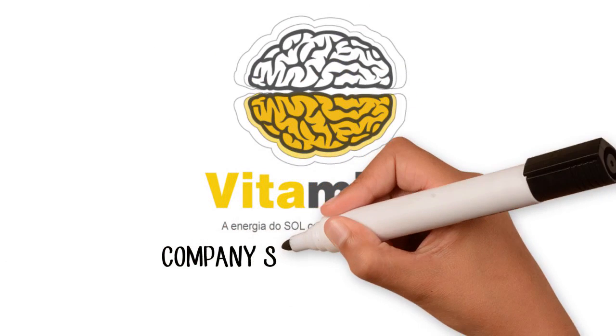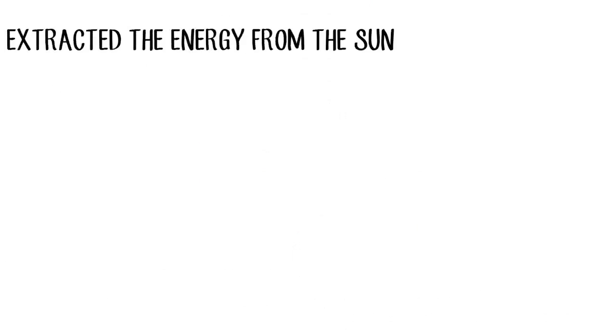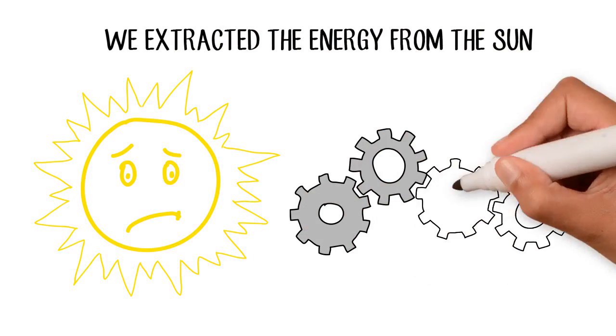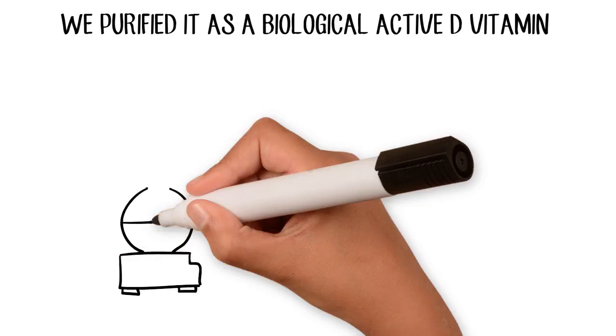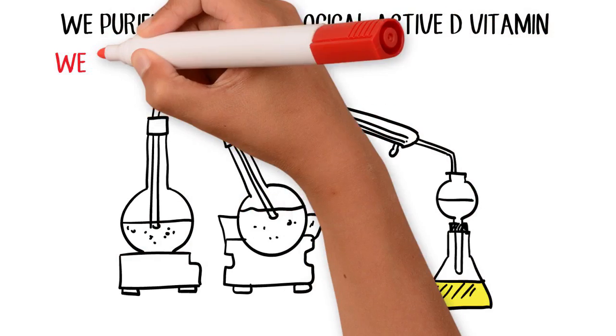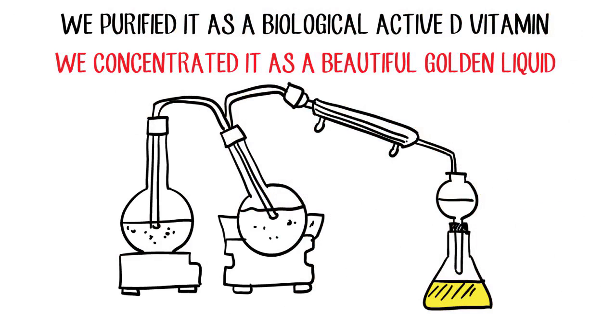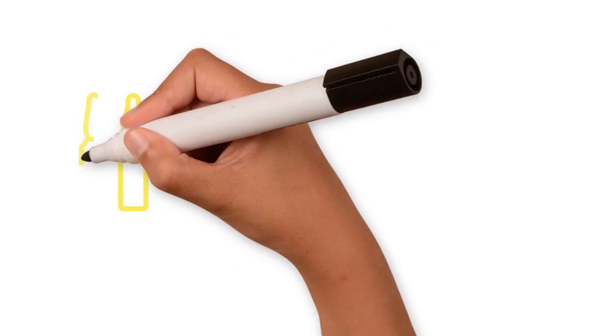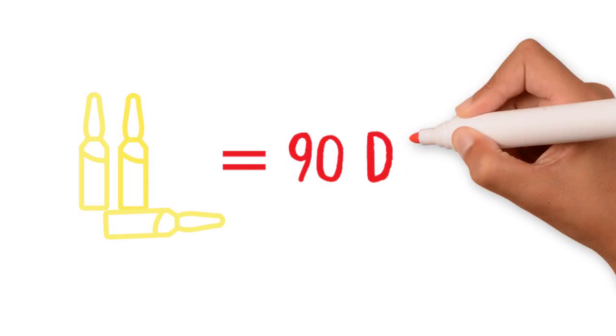Our vitamin D company solves this problem. We extracted the energy from the sun. We purified it as a biological active D-vitamin. We concentrated it as a beautiful golden liquid. There are 90 days of the energy from the sun concentrated in this fancy vial.